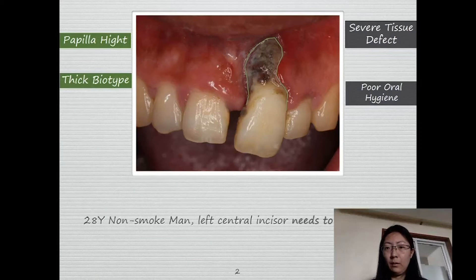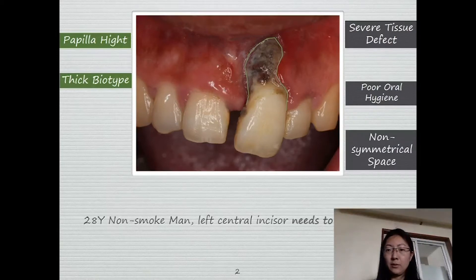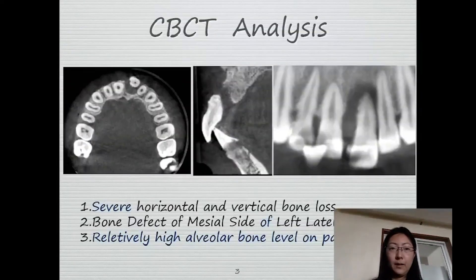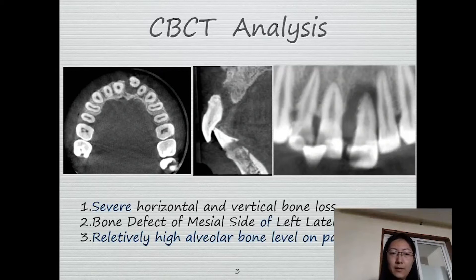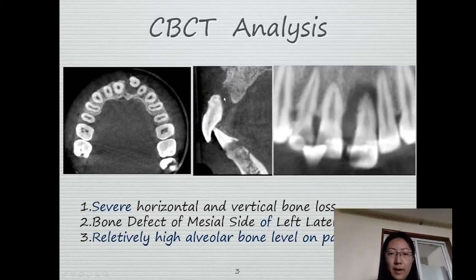Poor oral hygiene and non-symmetrical space, but he refused orthodontic treatment. The CBCT analysis showed severe horizontal and vertical bone loss, and unfortunately the mesial side of the lateral incisor has more than two-thirds bone defect. There is a relatively high alveolar bone level on the palatal side.